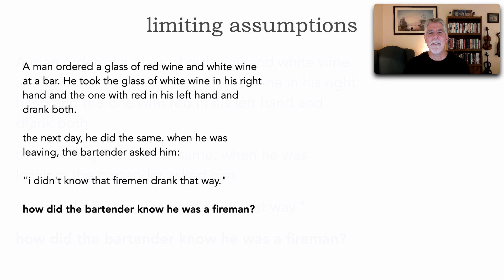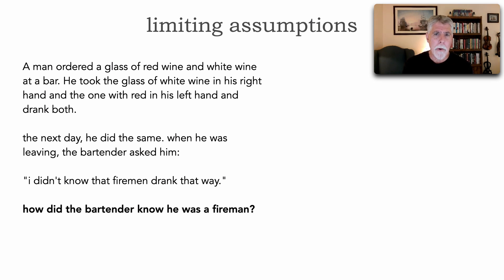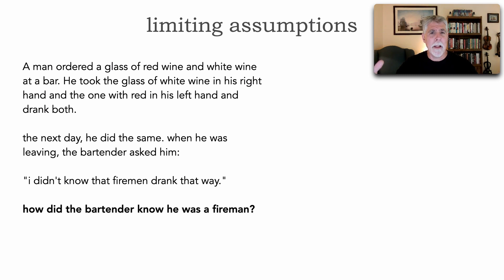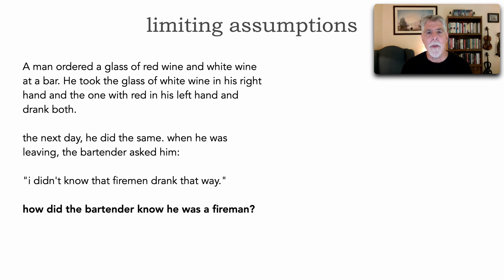The first thing we do in problem solving is to look for a connection between the data and the unknown. The unknown is: how did the bartender know he was a fireman? Our data: he had red wine and white wine — maybe fire trucks are red and white? He held each in his right and left hand, drank both, he's a repeat customer at the bar, and he eventually left. I see no direct connection between the data and the unknown.